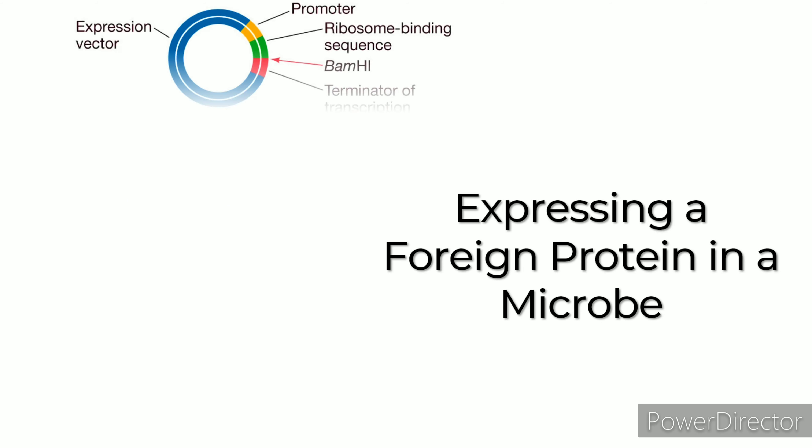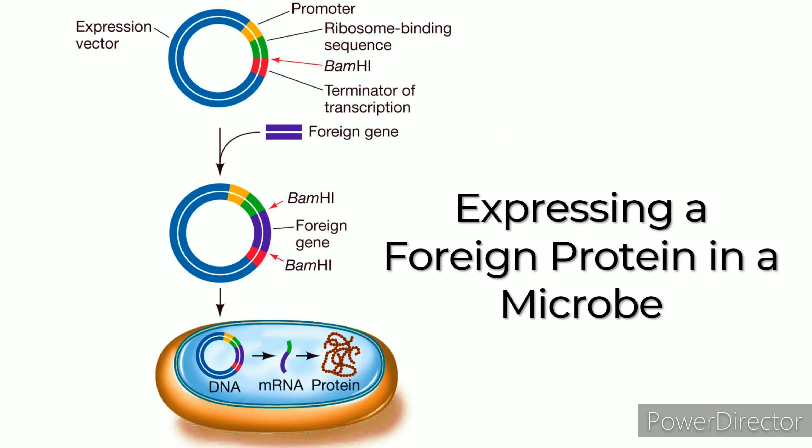A diagram shows how to express a foreign protein in a microbe using an expression vector. Expression vectors are used for prokaryotic expression systems for the high-level production of recombinant proteins.